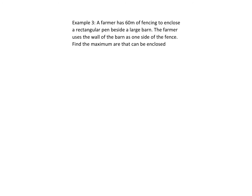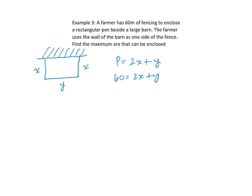Here we have a farmer who has 60 meters of fencing to enclose a rectangular pen beside a barn. The farmer will use the barn wall as one side, so no fencing is needed there. That leaves two sides of length x and one side of length y, giving the constraint 2x plus y equals 60. We want to find the maximum area, which is x times y.